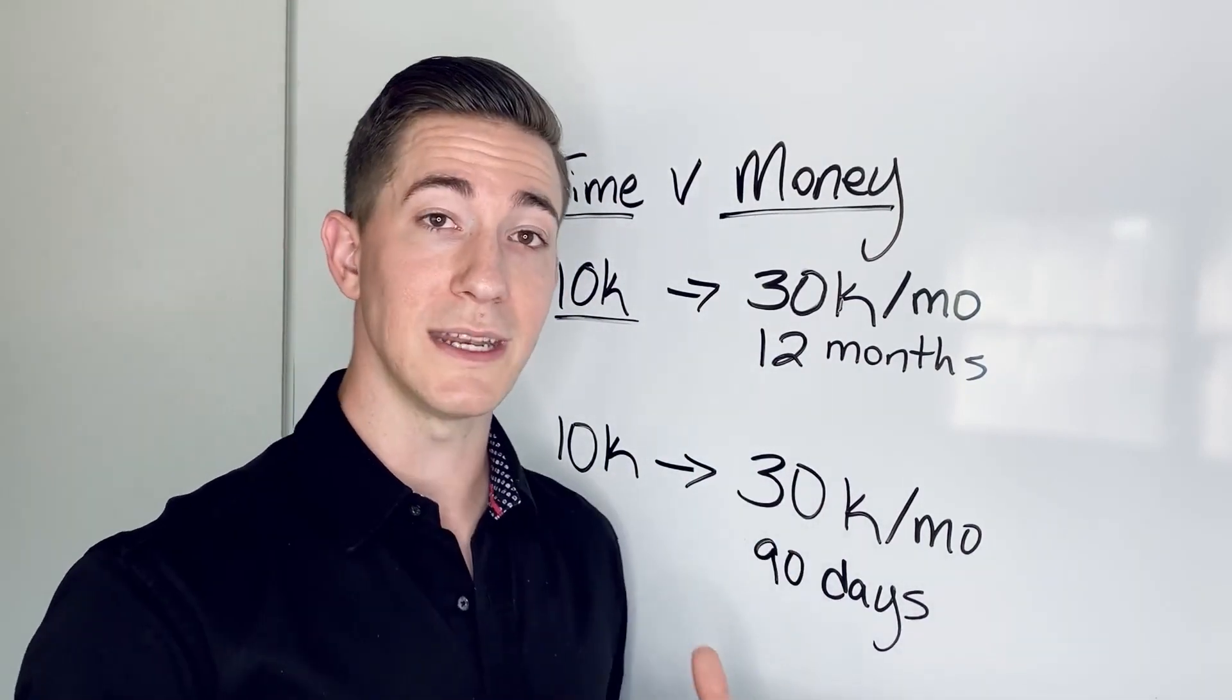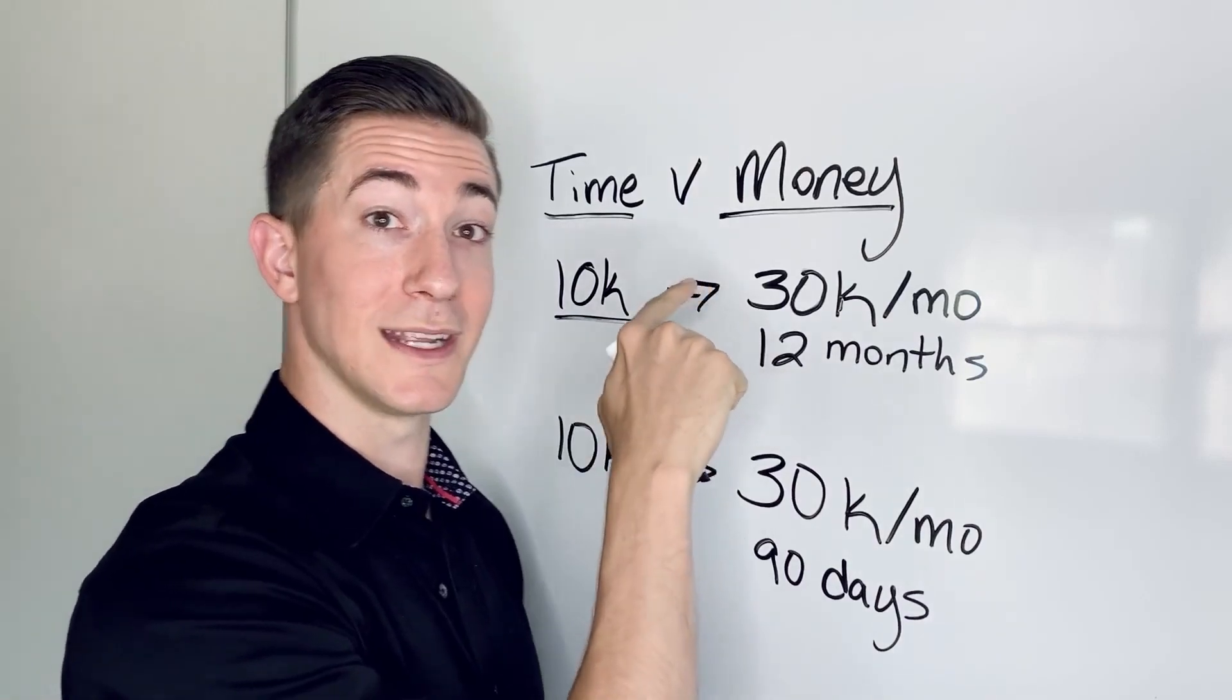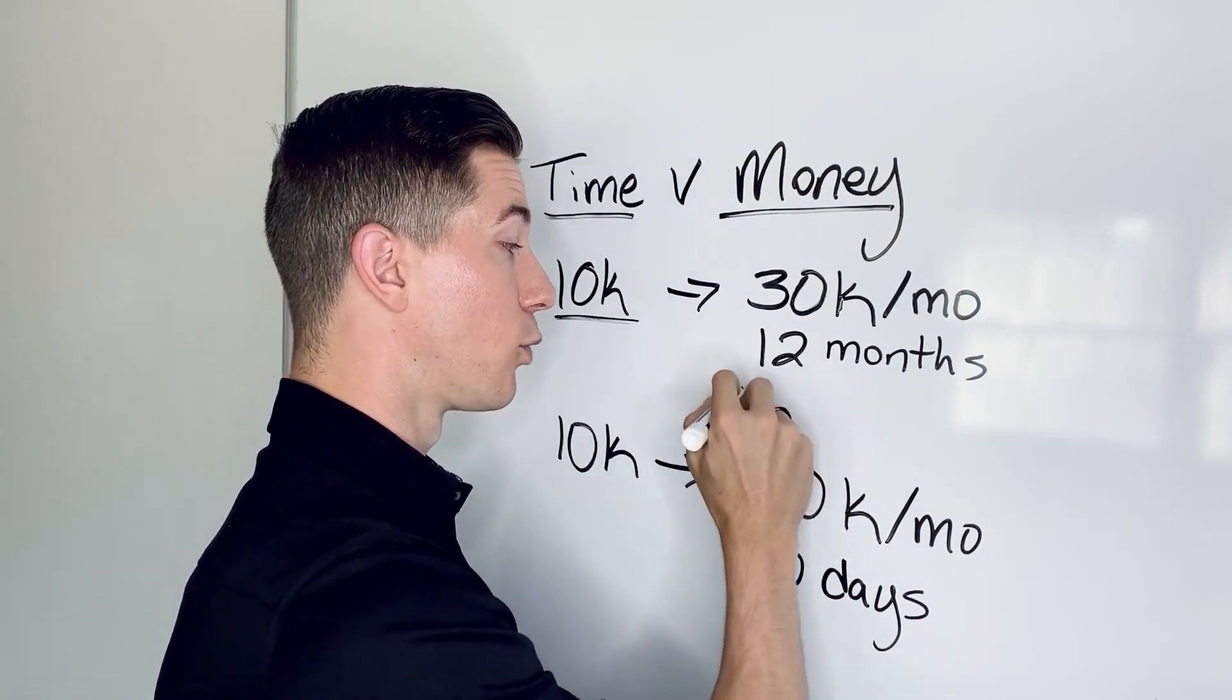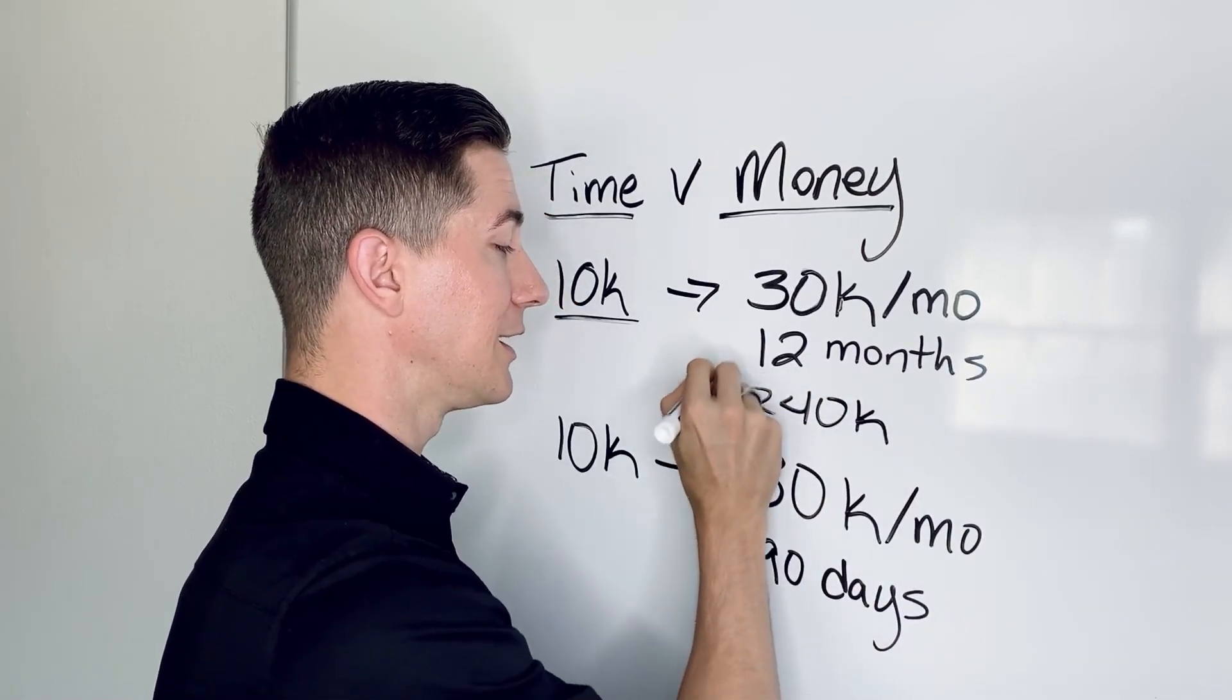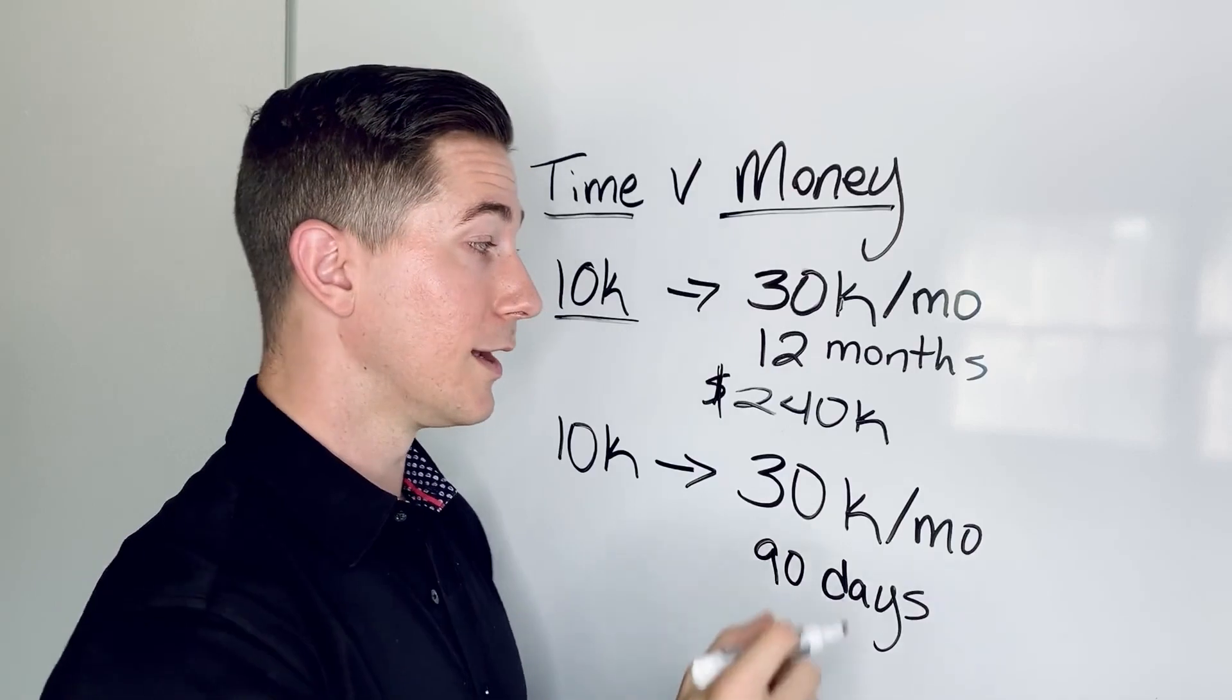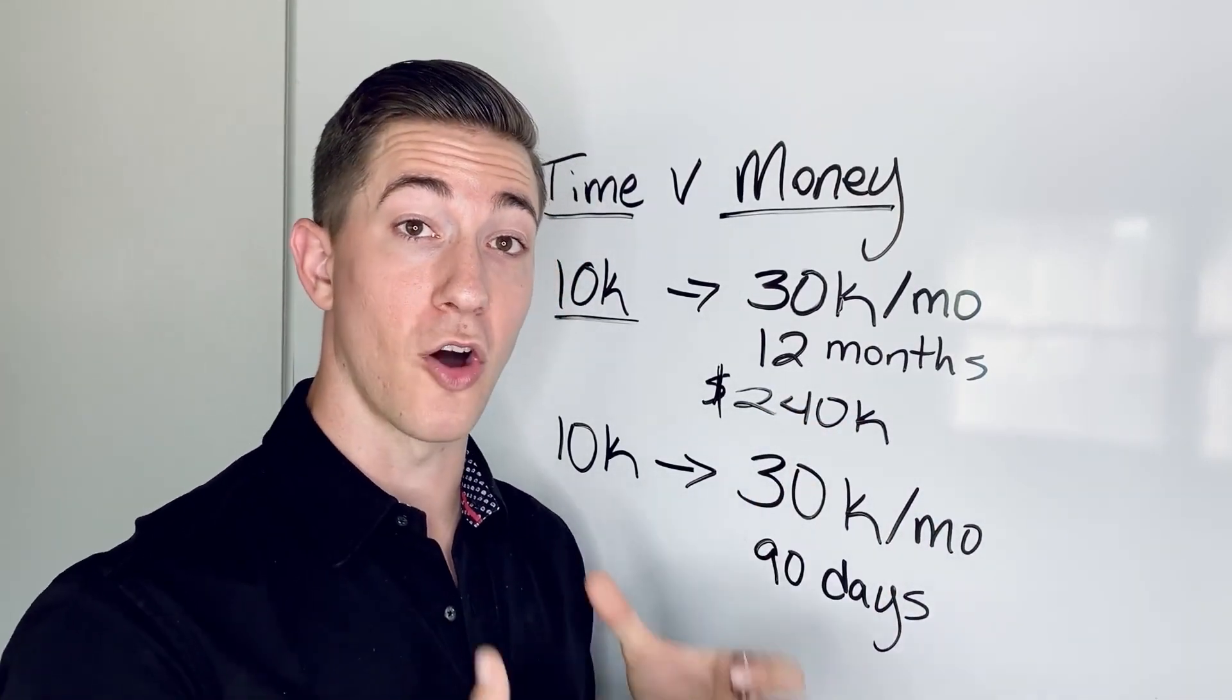So what we really need to pay attention to though is the opportunity cost of the first option. If you are at $10K and you're wanting to get to $30K, that's a $20,000 per month difference there, which would be $240,000 over the course of a year. $240,000 is the difference over a year that this income is. So you're missing out on $240,000 in a year if you're trying to figure this out on your own.